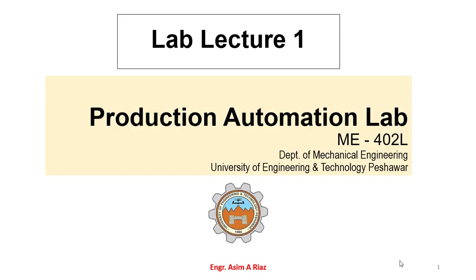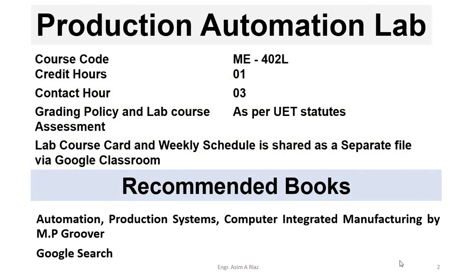Welcome to the new lab course. The name of the lab is Production Automation Lab or Advanced Manufacturing Lab. In this lab course we will discuss multiple machine tools or processing equipment on the floor of the production automation lab in the Department of Mechanical Engineering, University of Engineering and Technology Peshawar. The course code is ME402L — a one credit hour and three contact hour course. The lab course card and weekly schedule has already been shared as a separate file in Google Classroom.